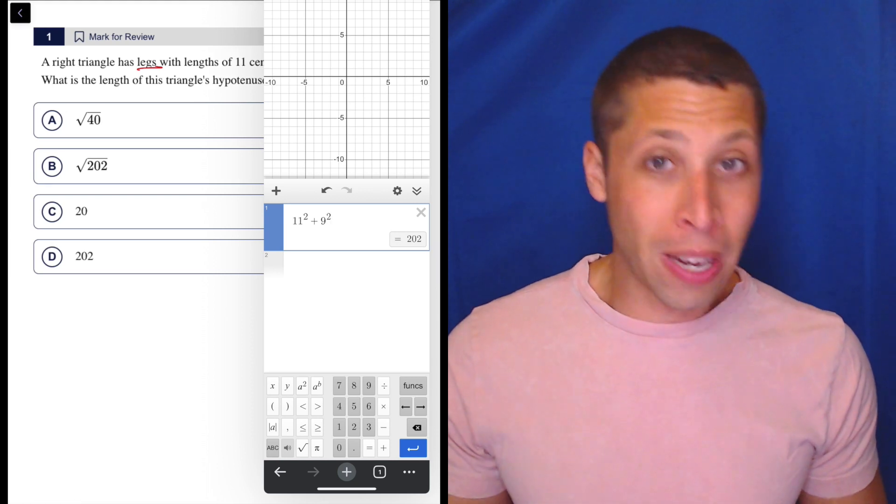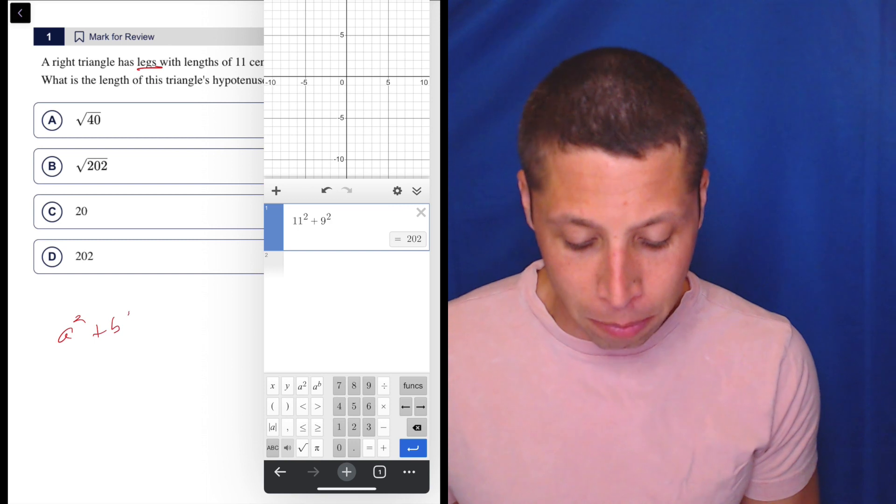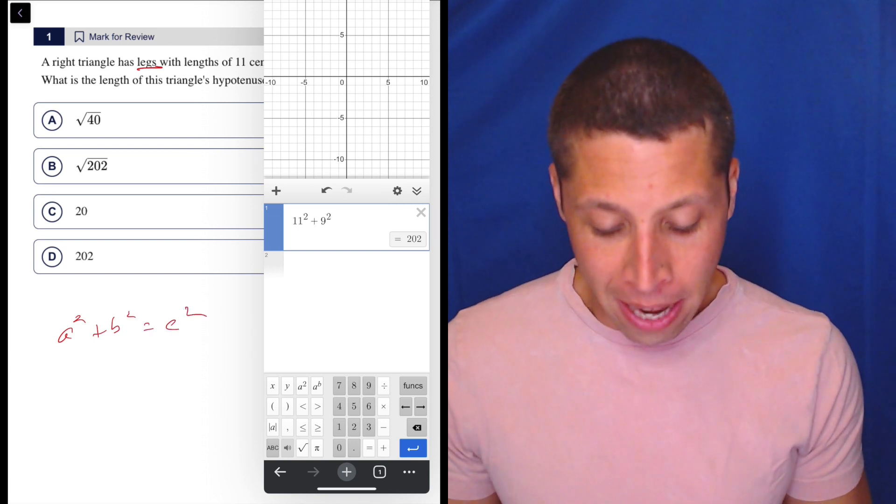So we have to take the square root of that because it's Pythagorean theorem. It's a² + b² = c², so you have to take the square root at the end.